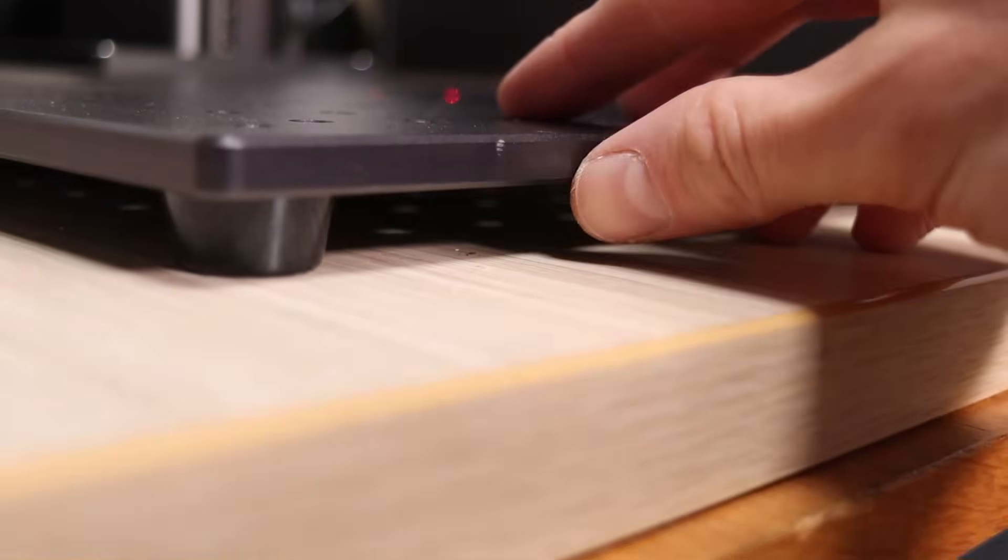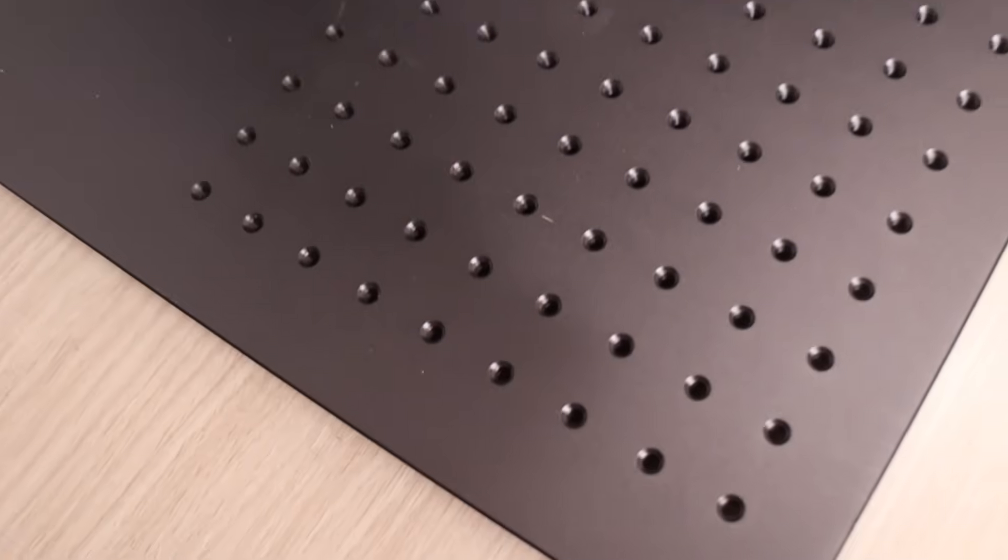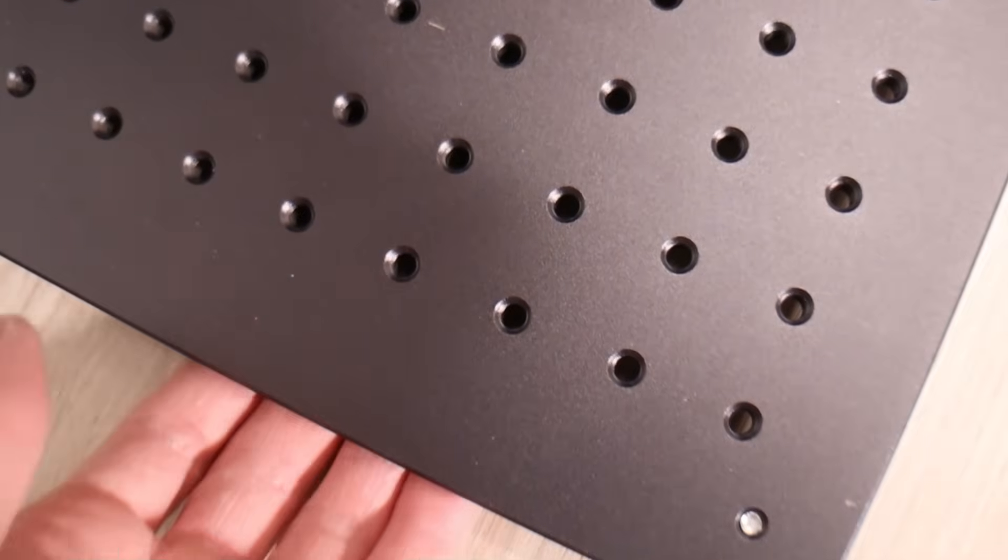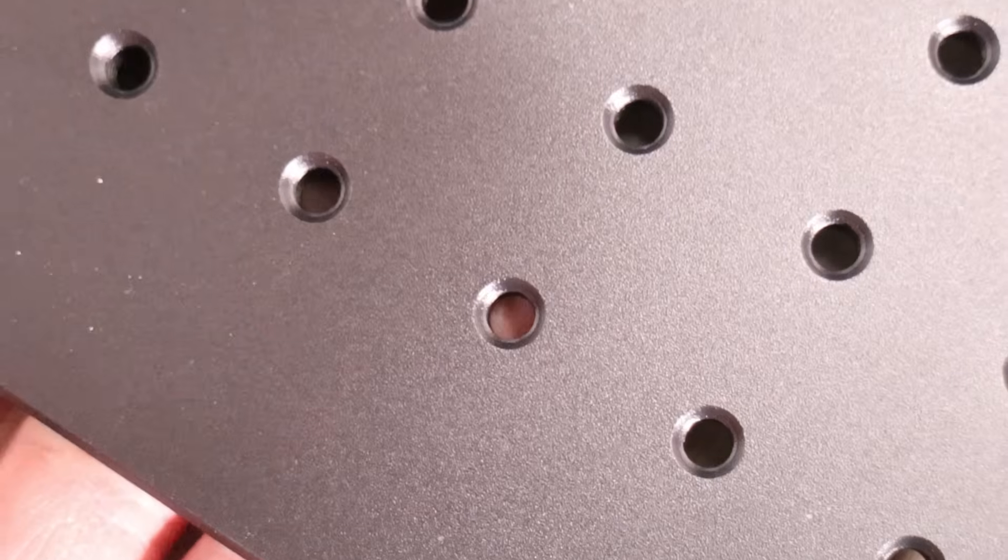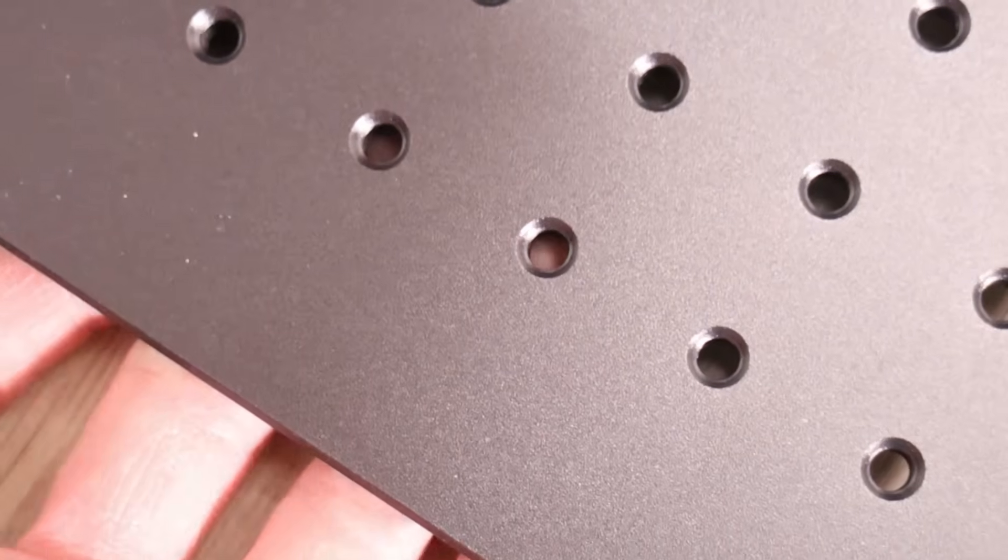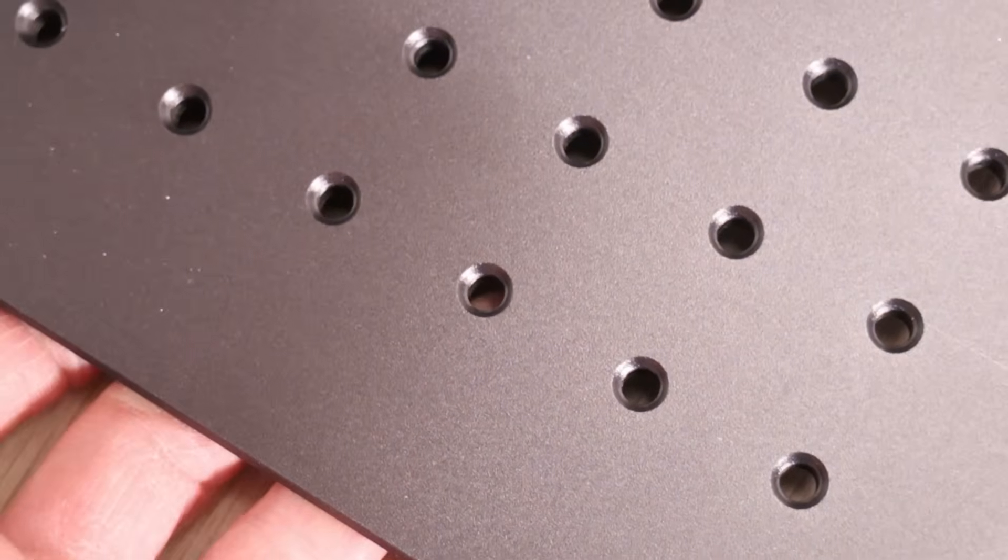The base plate is thick and sturdy, but if you plan to cut materials directly on it, be cautious. The mounting holes go all the way through, which could damage your desk underneath. To prevent this, place a metal plate underneath when cutting.